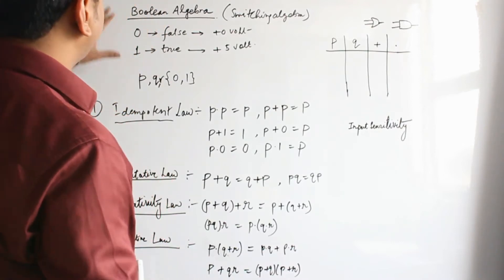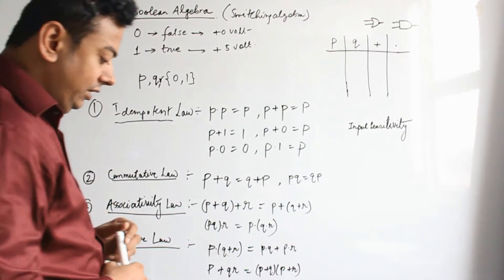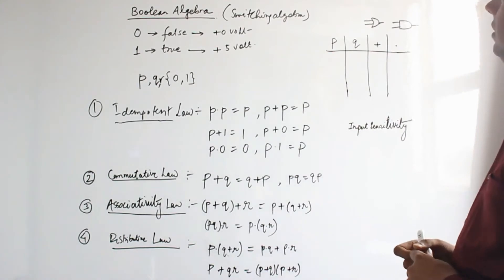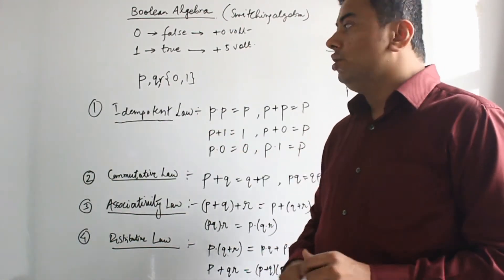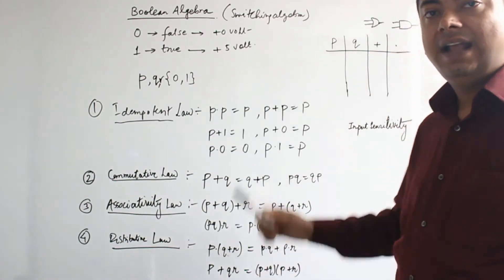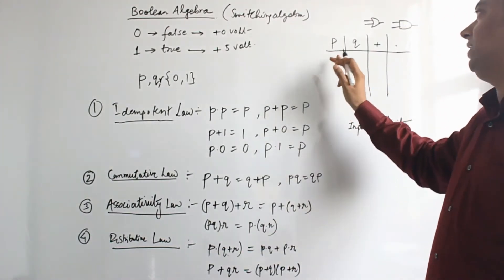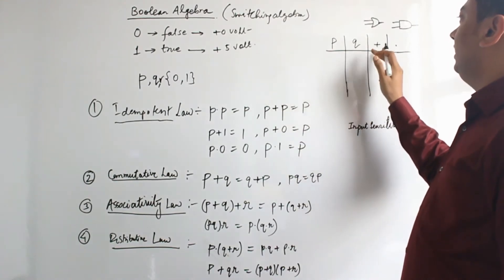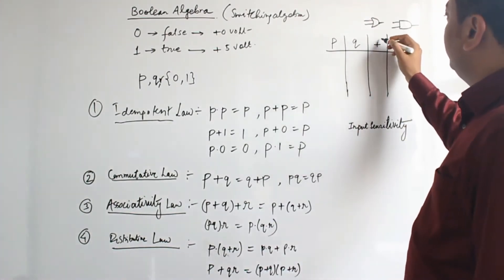There are four properties, or four laws, that belong to Boolean algebra — we'll discuss them one by one. First, let's see what operations we can perform on these variables. The basic operations are OR, AND, and NOT. A variable like P can have value 0 or 1. For two variables P and Q, we have the plus (+) sign meaning OR, and dot (·) meaning AND.